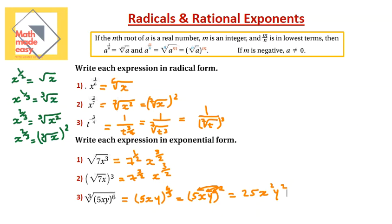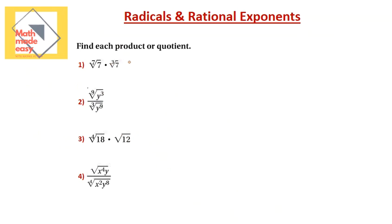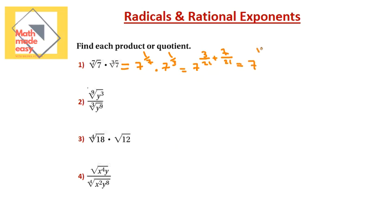Now let's look at the next group of questions. We can use exponential form to solve questions that can't be solved in radical form. For example, the 7th root of 7 multiplied by the cubic root of 7 — because they don't have the same index, we can't multiply using radical rules. Changing to exponential form: 7 to the power of 1 over 7, multiplied by 7 to the power of 1 over 3. Since we have the same base, we add the exponents. Finding a common denominator of 21 gives 3 over 21 plus 7 over 21, so the answer is 7 to the power of 10 over 21, which in radical form is the 21st root of 7 to the power of 10.